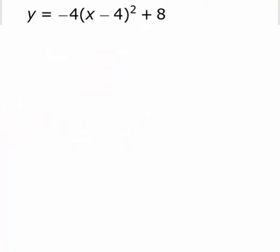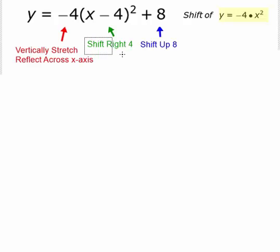Our last graph is y equal negative 4 times the quantity x minus 4 squared plus 8. This will be similar to the last graph, except instead of shifting negative x squared, we are shifting y equal negative 4x squared. Negative 4x squared is much like negative x squared, except it is vertically stretched by a factor of 4. Since we have replaced x with x minus 4, we are shifting that upside down stretched parabola right 4, and since we have added 8, we are shifting it up 8.